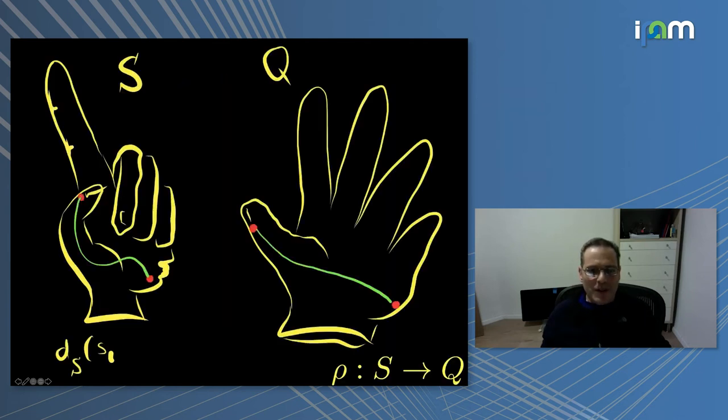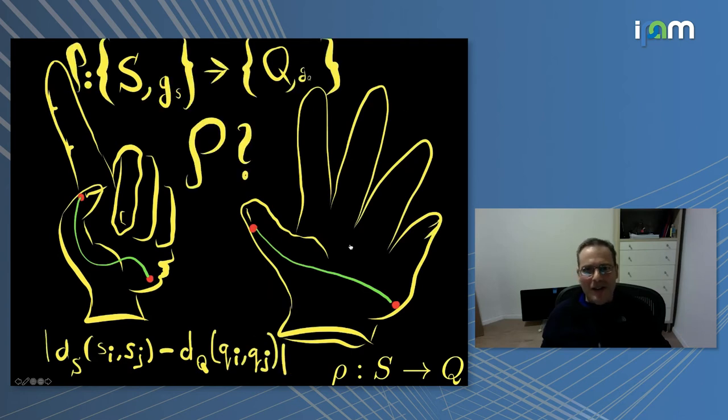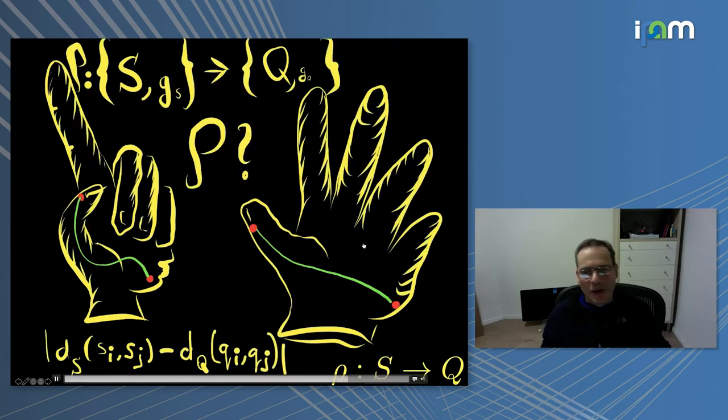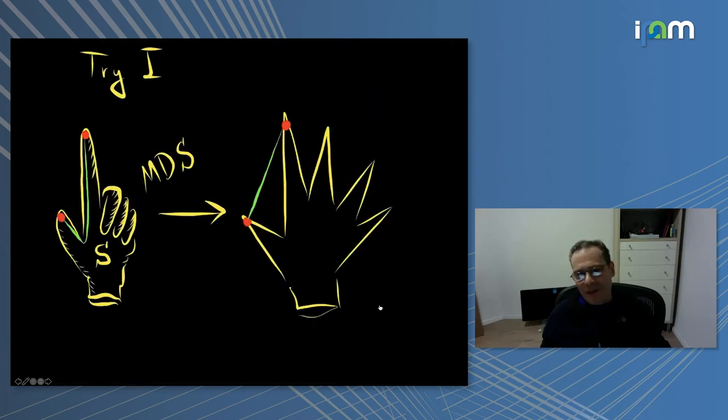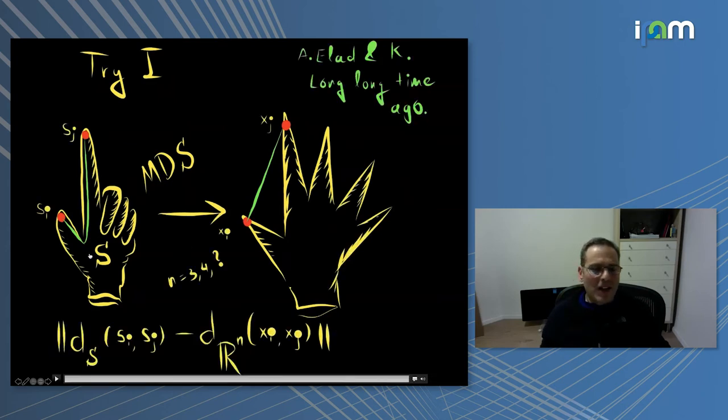This is the definition of the problem. We are looking at two surfaces, s and q, that are more or less isometric. What we would like to do is find the mapping, we call it rho, so that the discrepancy, the distortion of mapping all the distances between points on s to points on q would be as small as possible. The first attempt, about 17 years ago, or in fact more, 20 years ago, was to take each surface and try to map it into a Euclidean finite-dimensional Euclidean space.